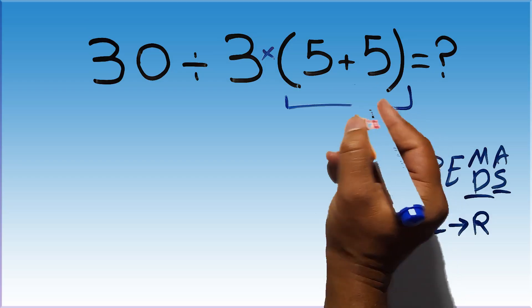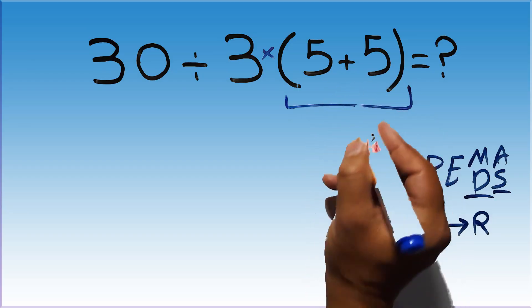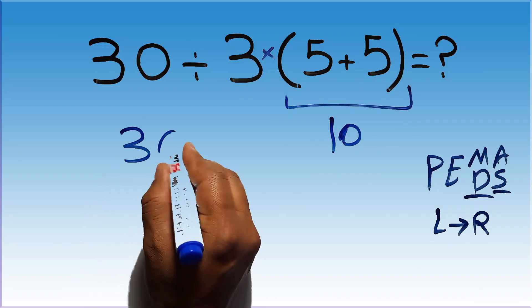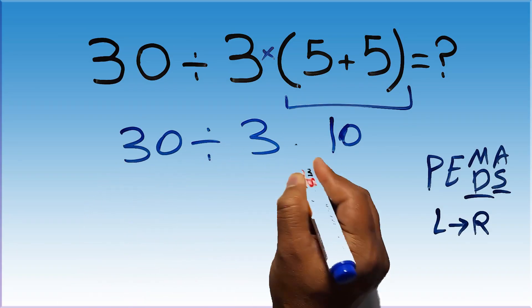So first this parentheses, inside this parentheses, we have 5 plus 5, which equals 10. So 30 divided by 3 times 10.